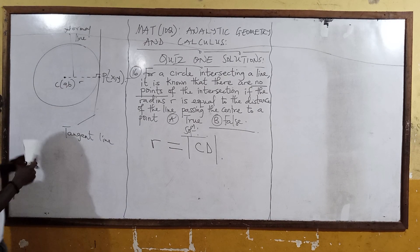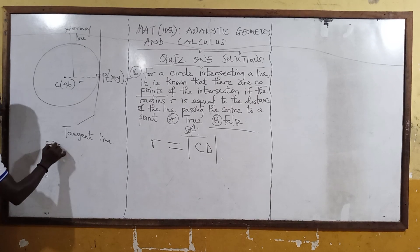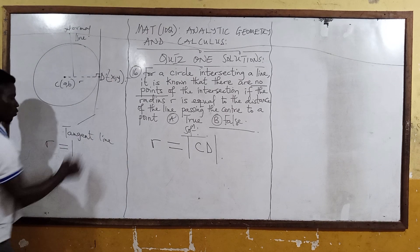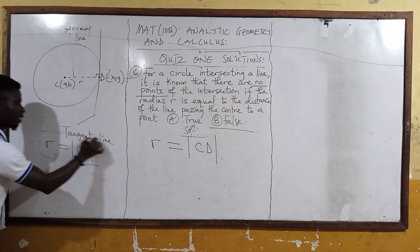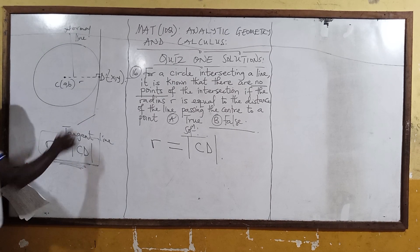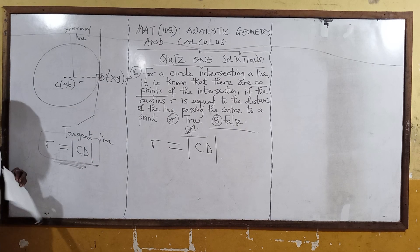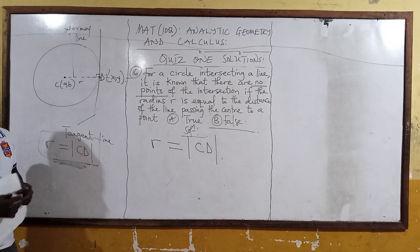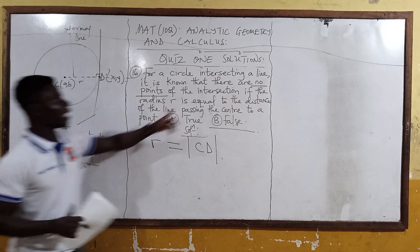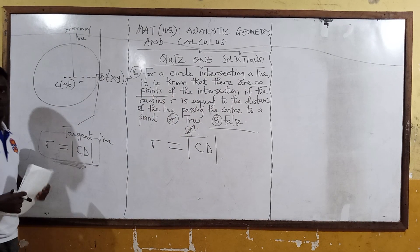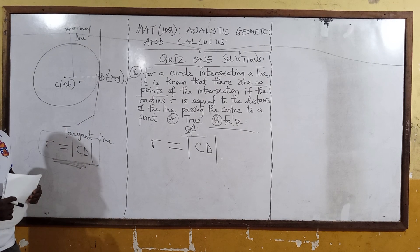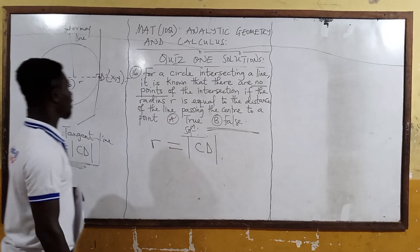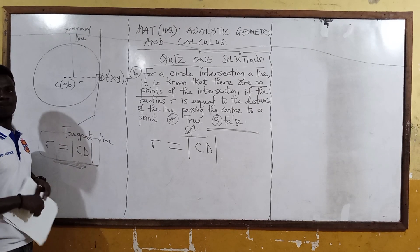So we can say that the radius, which is the length of CP, the radius R is equal to the length of CD. If this is happening geometrically, we can say that there is a point of intersection, which means that this line touches the circle at one point only. So there is a point of intersection — you cannot say there are no points. There is one point of intersection only. So the answer is false.